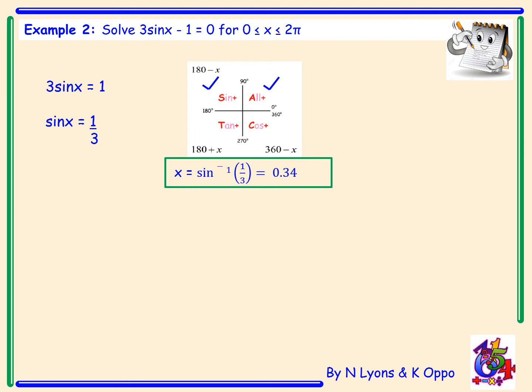The angle 0.34 is in the first quadrant. To get the angle in the second quadrant it is π − 0.34. Using your π button on the calculator gives a final solution of x = 0.34 or 2.8.